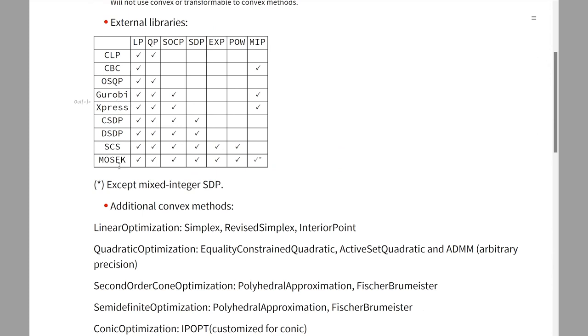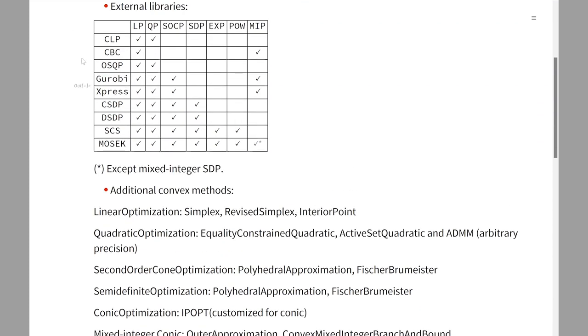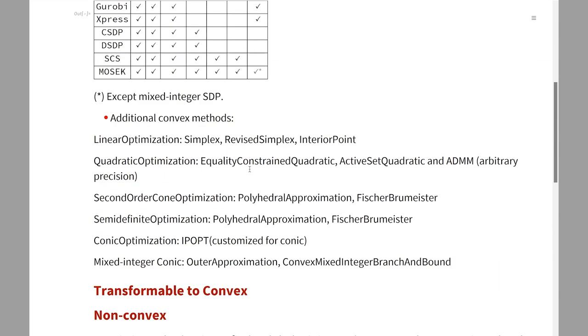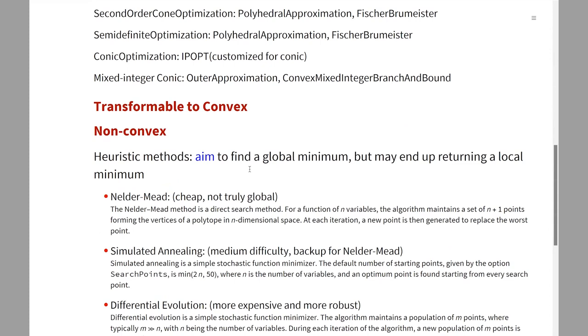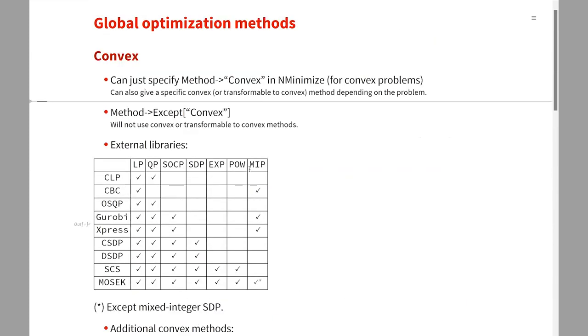Gurobi, Xpress, and MOSEK are commercial solvers, so you may need a license from those companies, which are often free for academic users. Xpress even has a community license that is in Mathematica, so for small problems you will be able to use Xpress without any further trouble. For Gurobi and MOSEK, one would need a license from the companies. Most of these library solvers are in the default method—they're very efficient.